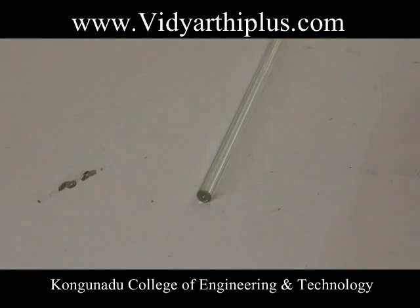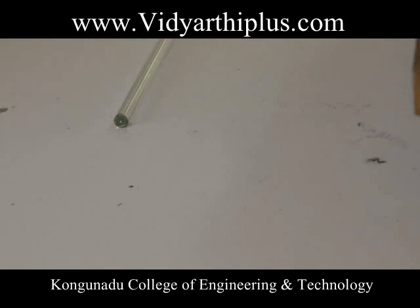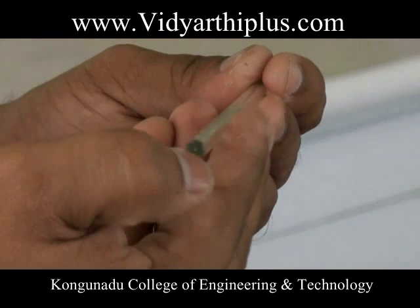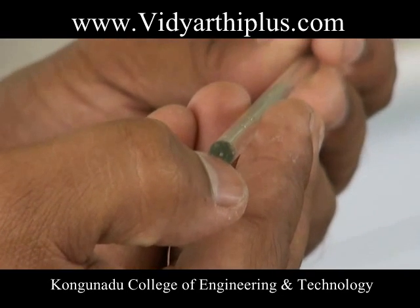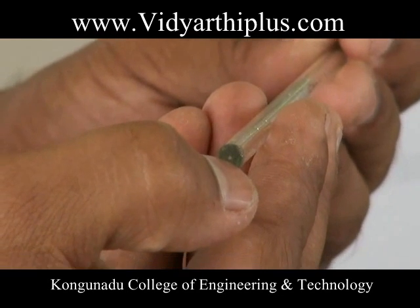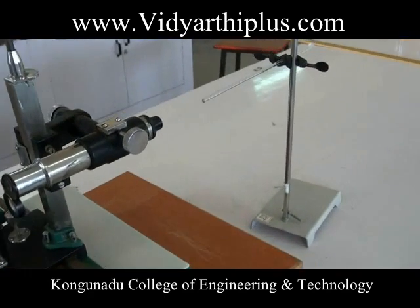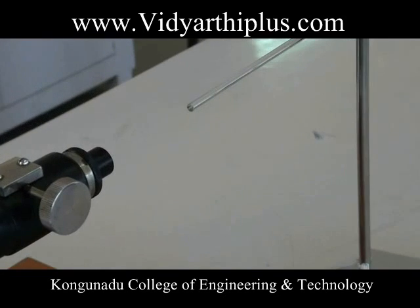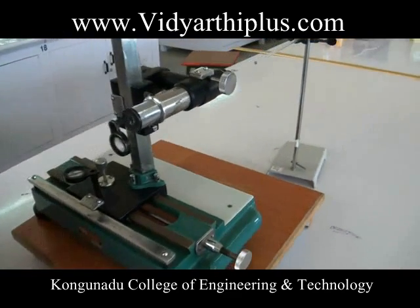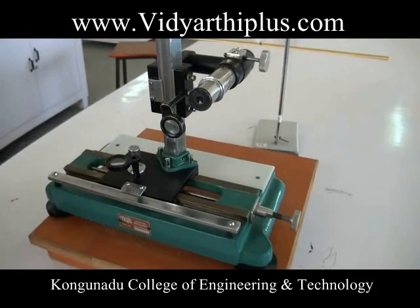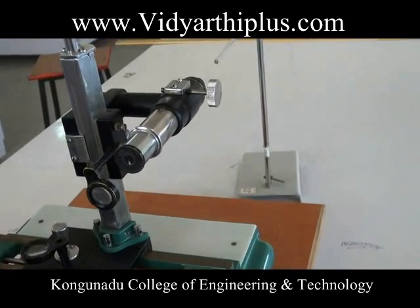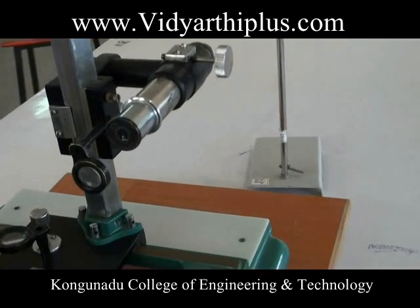The diameter of the capillary tube is noted by observing it using a travelling microscope. The inner radius of the capillary tube should be found using a travelling microscope. For more accuracy, we measure two diameters using two cross wires — one vertical cross wire and one horizontal cross wire — to determine the diameter in both horizontal and vertical directions.